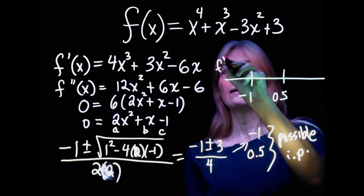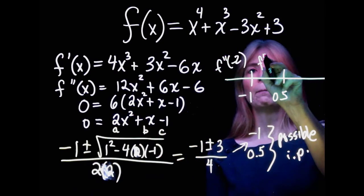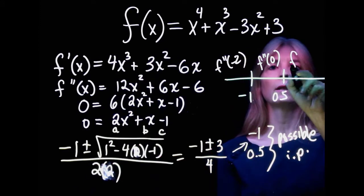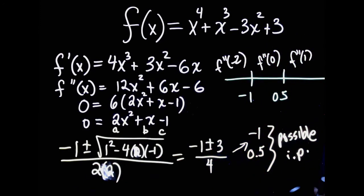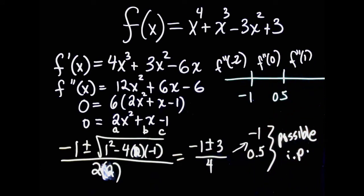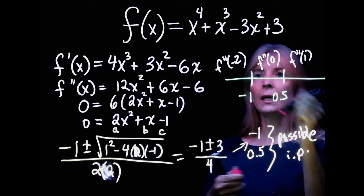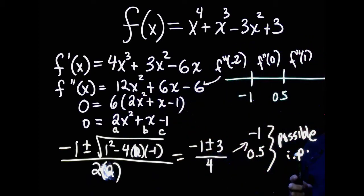And then you pick values in between to plug into your second derivative. So in other words, I might plug in negative 2 here. Here, I'm going to plug in 0, and then here, I'm going to plug in 1.